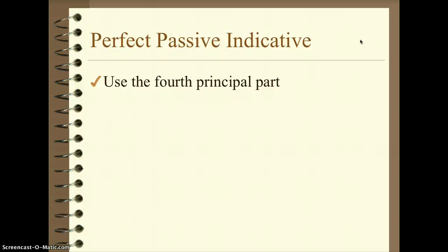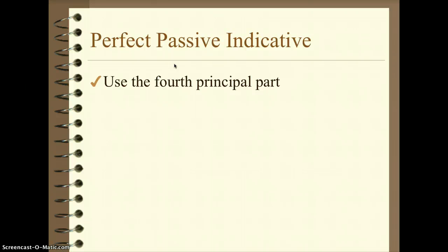We're back for the perfect system passive indicative. The perfect system means three tenses: perfect, pluperfect, and future perfect. The perfect is the most important — that's where we get the stem from, and it's also the most commonly used in Latin. Pluperfect is the next most commonly used, and the future perfect is actually pretty rarely seen, but it's still there enough that the Romans gave it a whole new ending.